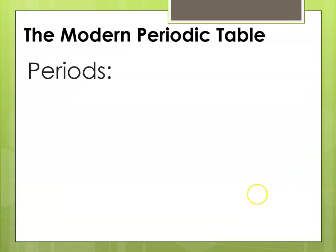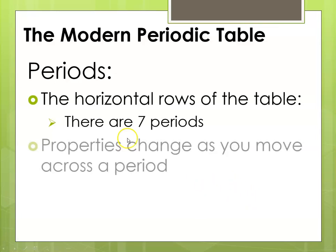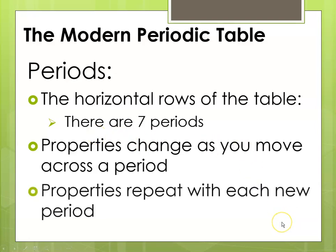The modern periodic table is separated into periods. The periods are the horizontal rows, and there are seven periods which correspond to the seven possible principal energy levels. The properties change as you move from left to right across a period and then repeat again with each new period.